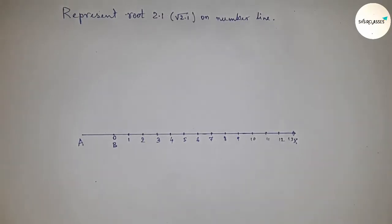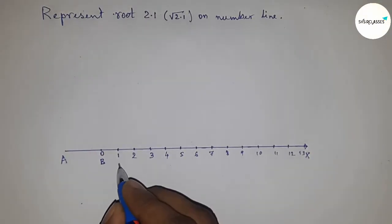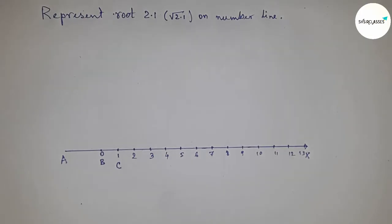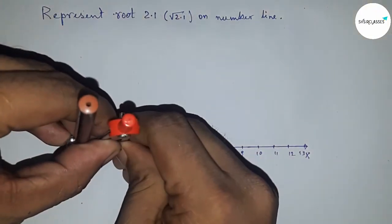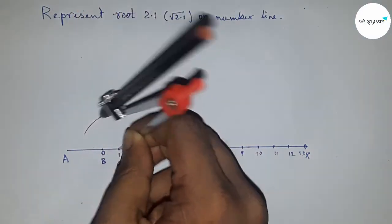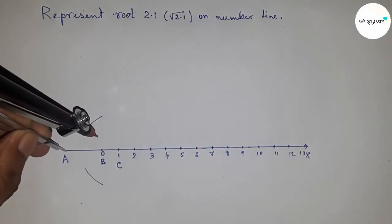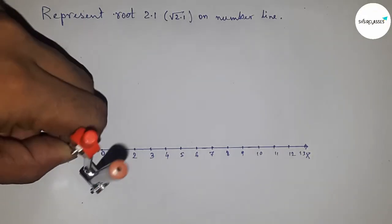Take this as point C. Now bisect the line AC. Take greater than half of AC and draw an arc. Here we're bisecting the line AC by compass.